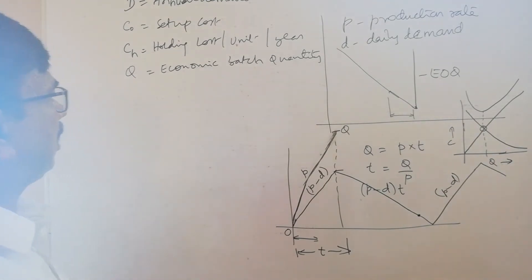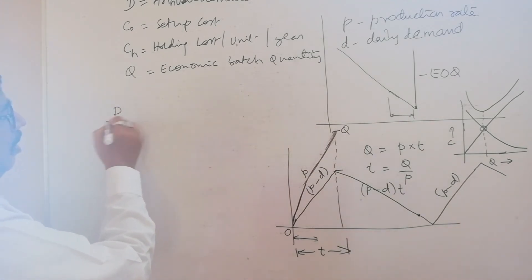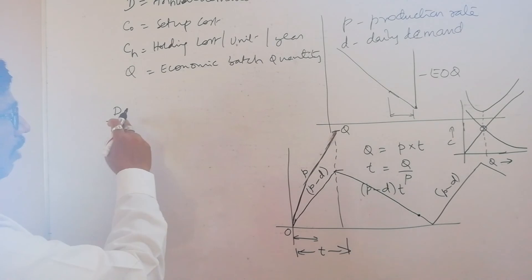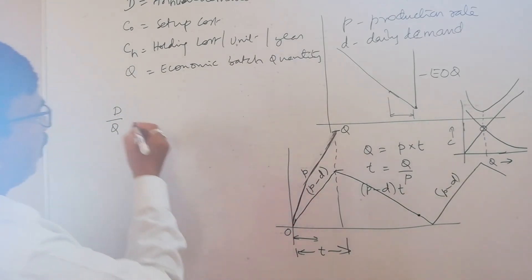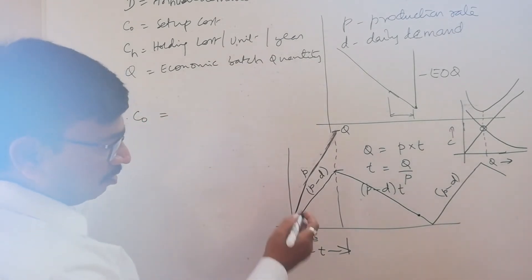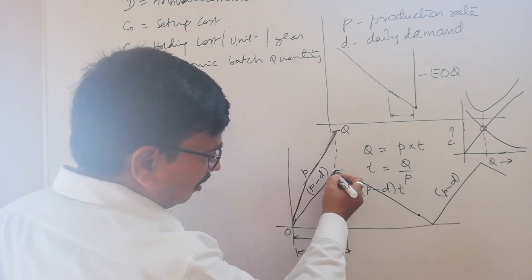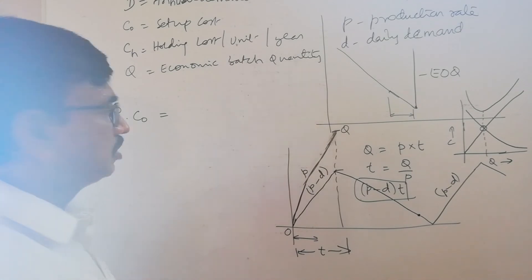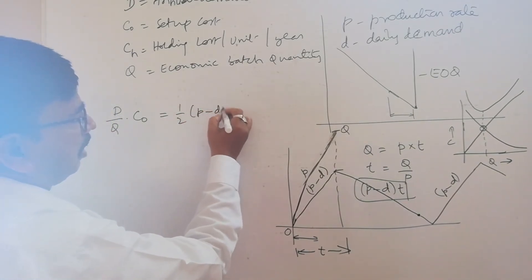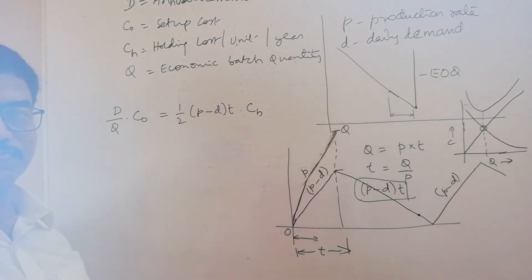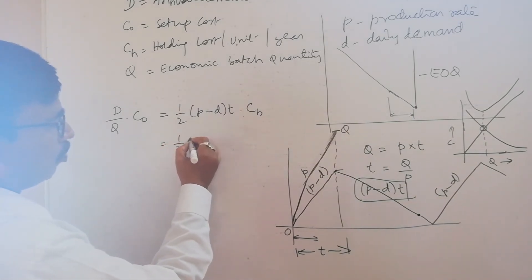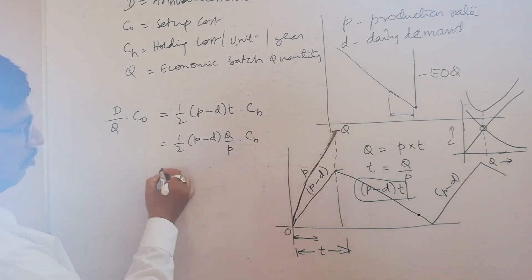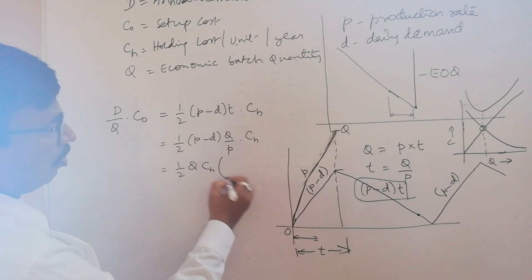The total setup cost is D by Q multiplied by C0, where D by Q gives the number of times we have to set up the production facility. For inventory carrying cost: the minimum inventory is 0 and maximum inventory is P minus D into T. So the average inventory is one-half into P minus D into T, multiplied by CH the holding cost. This equals one-half into P minus D into T, where T can be replaced by Q by P, giving us one-half times Q times CH times (P minus D) by P.